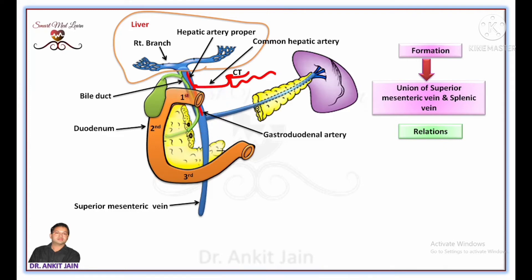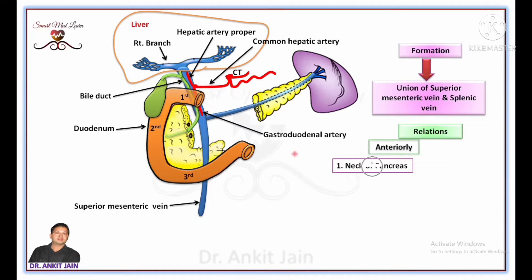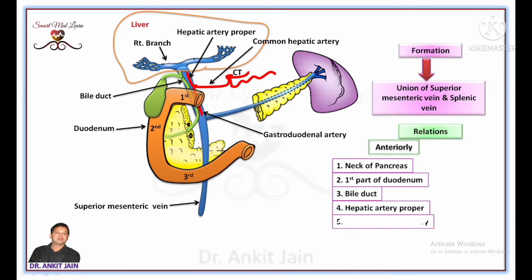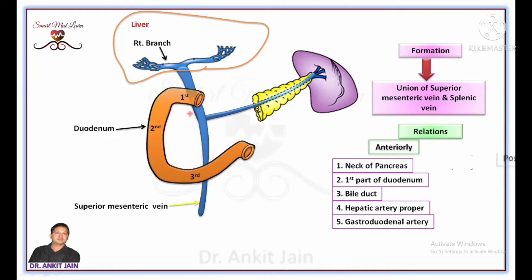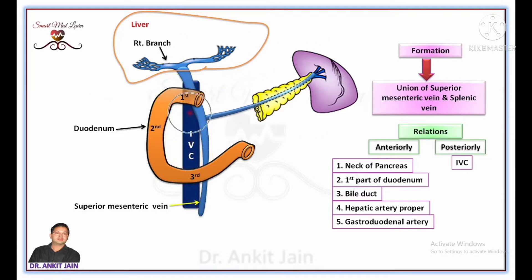Now you can see in this figure: anteriorly, portal vein is related with the neck of the pancreas, first part of the duodenum, bile duct, hepatic artery proper, and gastroduodenal artery. Posteriorly, portal vein is related with the inferior vena cava.